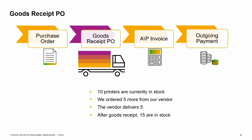Now let us look at the effect of the goods receipt PO in a business case. Ten printers are currently in stock. We ordered five more from our vendor, and our vendor has just delivered five. After we enter the goods receipt PO, 15 are in stock. When our purchase order was created, five showed as ordered. Now the ordered quantity has returned to zero.